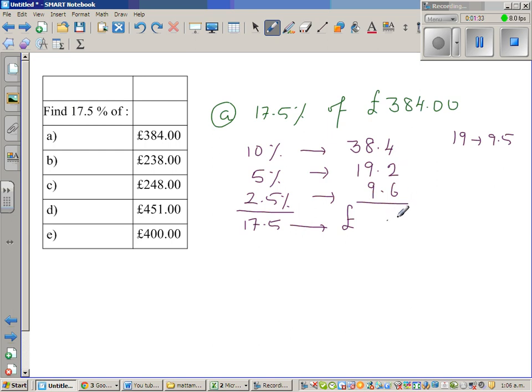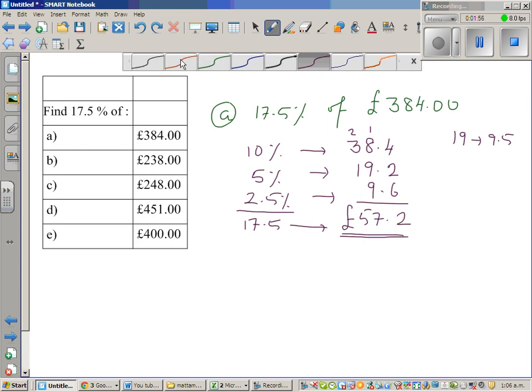So 4 plus 2 is 6, plus 6 is 12 remainder 1, 9, 18, 27, am I right? 2, 3, 2 plus 3, 5 plus 1, 6, 5 plus 1, 6. Hopefully it is £67.2. Okay, we'll check this on calculator later.